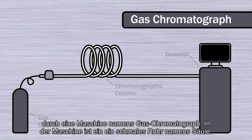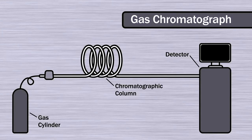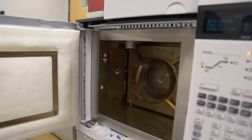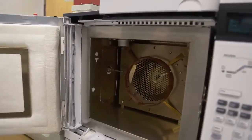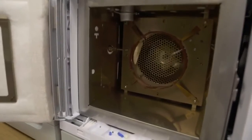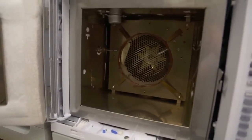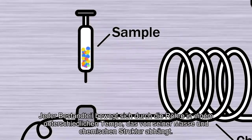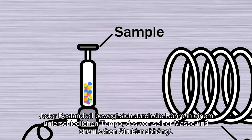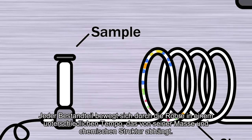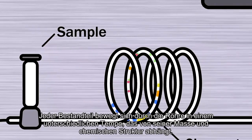Within the machine is a narrow tube called a column. Each constituent moves through the tube at a different rate depending on its mass and chemical structure.